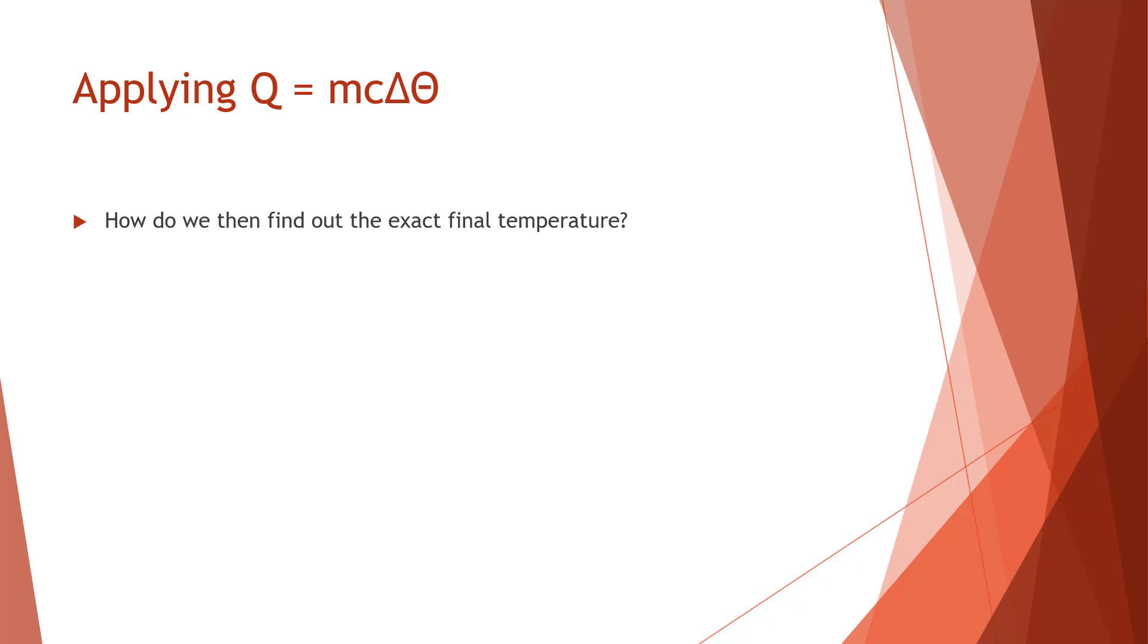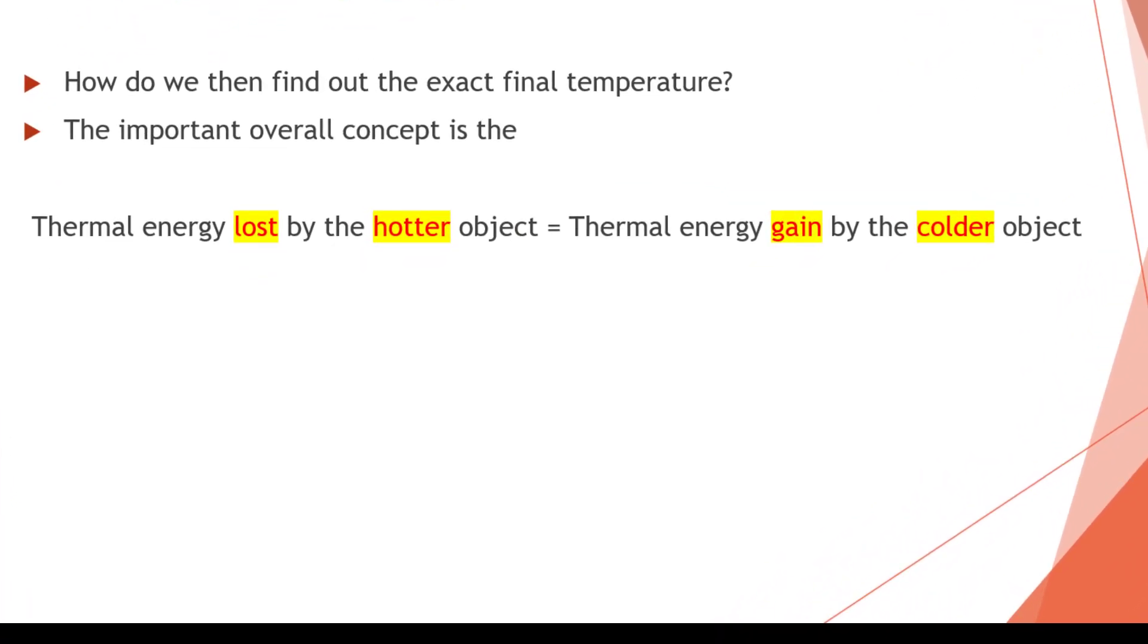So how do we then find out the exact temperature? The important overall concept is using the thermal energy loss by the hotter object equals the thermal energy gained by the colder object. So this is in line with conservation energy. But of course, another important assumption is that there is actually no loss of thermal energy to the surroundings.